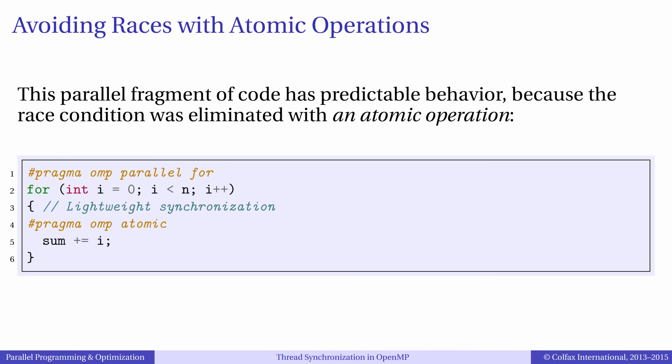There is a lightweight mutex in OpenMP which may be used to protect race conditions on a single scalar variable. This lightweight mutex is known as atomic operations.